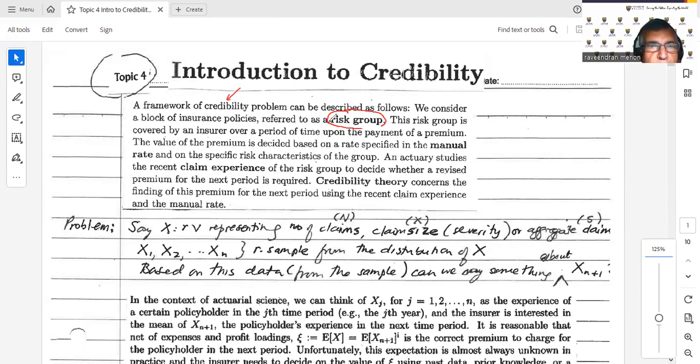And this risk group is covered by an insurer over a period of time. So you have a block of insurance policies we are going to refer to as a risk group, and this risk group is covered by the insurer over a period of time upon the payment of premium. Makes perfect sense.